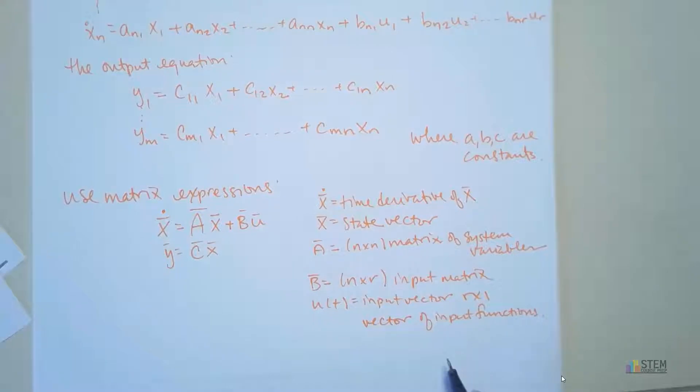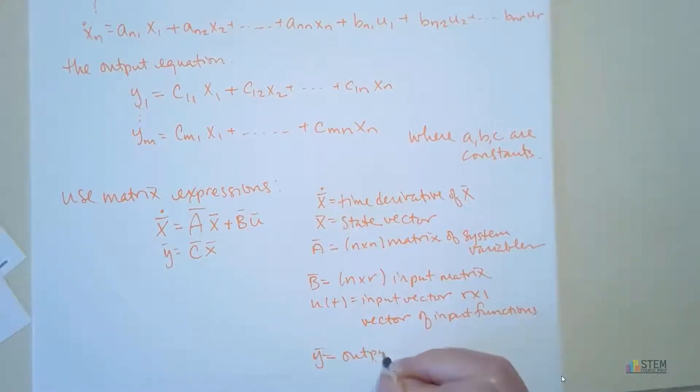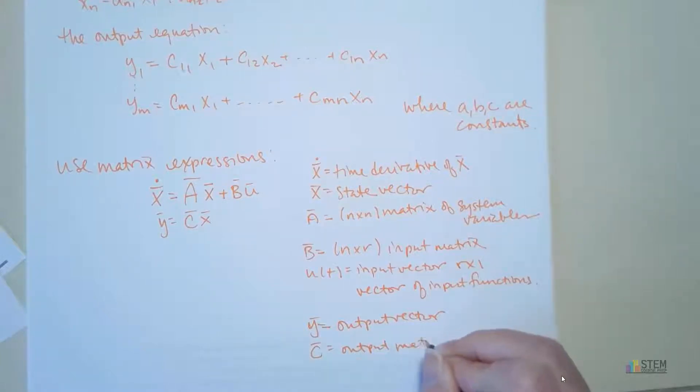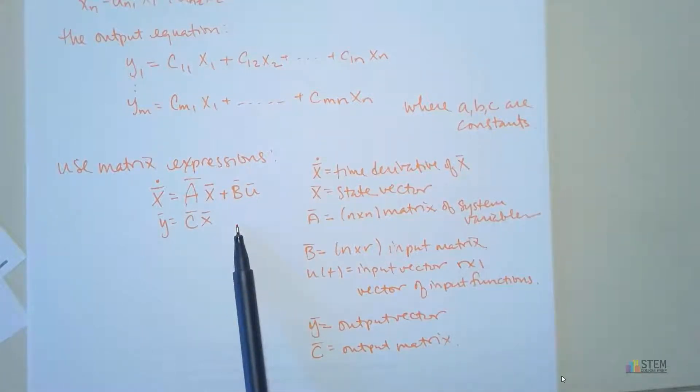Y is going to be our output vector. And then C, finally, is just called your output matrix. So C is used to tell, if you're doing this in a program on the computer, C would be used to tell that program what output you want to see. Now, I want to point out, if you look in a textbook, a lot of the times it's going to have y equals Cx plus D. It'll have a D term over here. We're not going to use D because that's more advanced than what we need. That's for use when you have coupling in your system. So we're not really going to have that. So we're just going to use y equals Cx. So if you see a second term here that has a D in it, that's what it is. It's just for more advanced problems that we don't need.